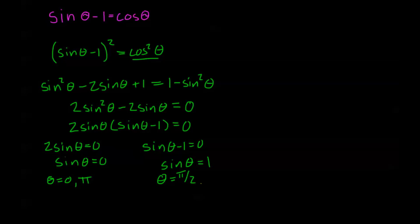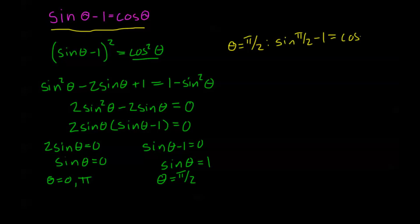Back to our problem: I have three candidate solutions, but before adding 2kπ I need to plug them into the original equation. For theta equals π/2: sine(π/2) minus 1 equals cosine(π/2) gives 1 minus 1 equals 0, which is 0 equals 0 — valid. For theta equals π: sine(π) minus 1 equals cosine(π) gives 0 minus 1 equals negative 1, giving negative 1 equals negative 1 — also valid.